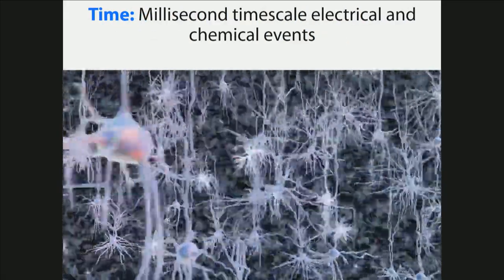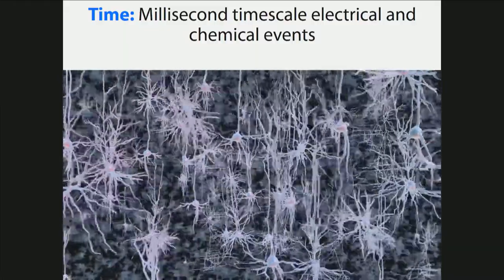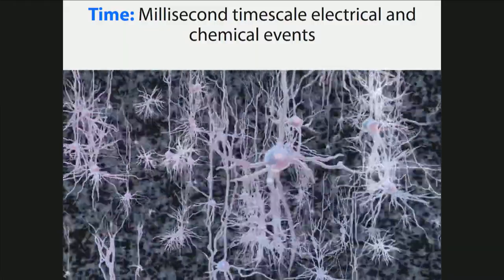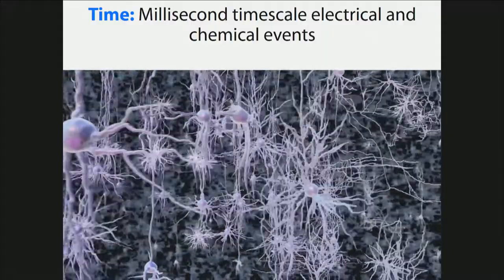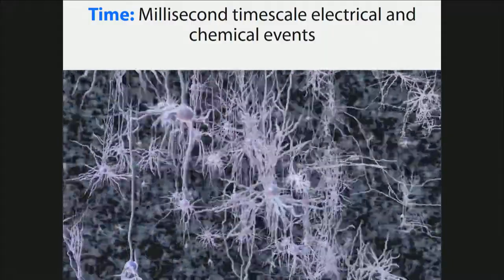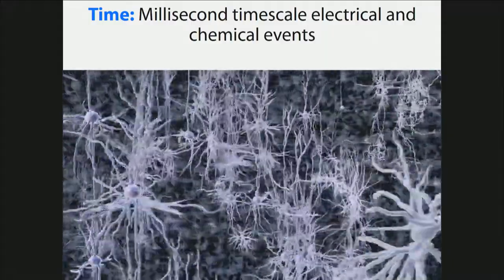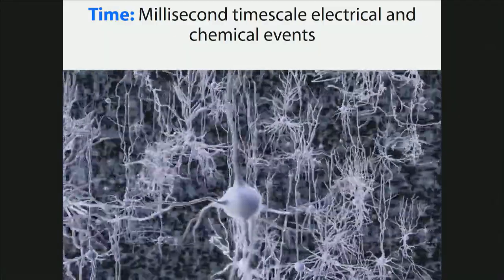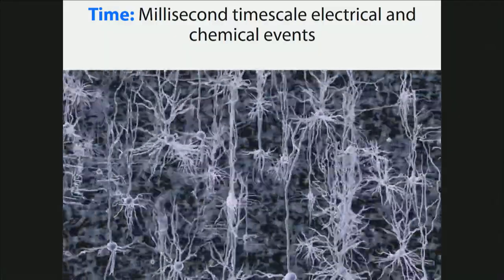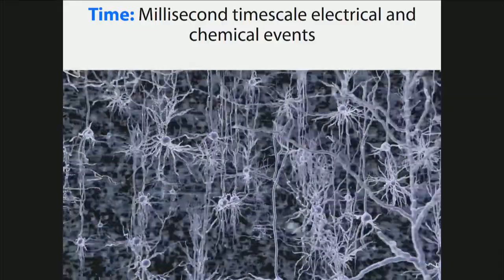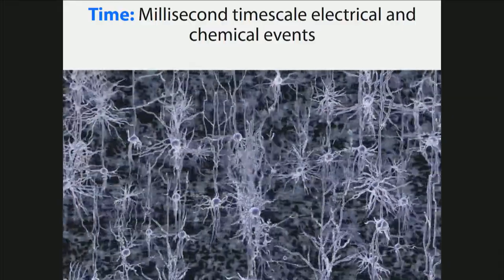The other issue we confront in brain science is time. If you care about memory, Alzheimer's, Parkinson's disease, development, or aging, those are long timescale events that take years, sometimes decades. But the quantum building blocks of what goes on in the brain are very brief — millisecond timescale electrical pulses that brain cells make and millisecond timescale chemical exchanges that brain cells use to communicate.